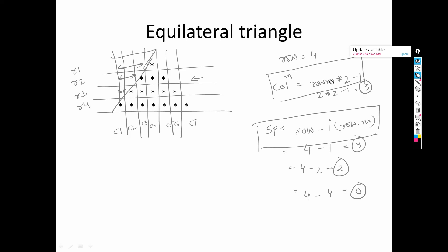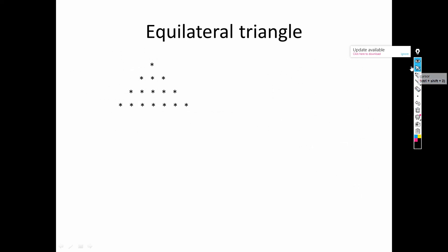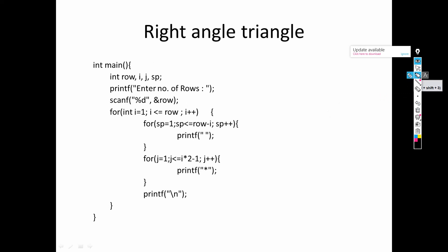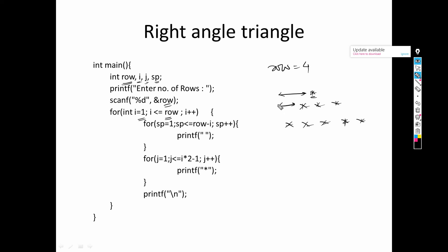Now we convert this relationship into the program. Looking at the code, we have taken variables: row, i, j for loops, and sp for space. We assume row equals four. i goes from one up to the number of rows. For each row, before printing the star, we need to print spaces — so for each row I've written a loop that prints spaces first, then a loop that prints stars.